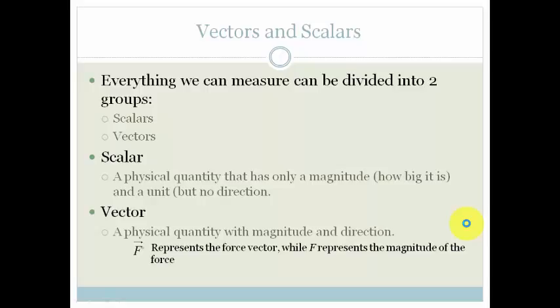Whereas, a vector is a physical quantity that has got magnitude and direction. And you can see that this f-dash here with a little dash at the top represents the force vector, where f represents the magnitude of the force. Now, we don't really use that so much anymore, but if you see it, then that's what that means.